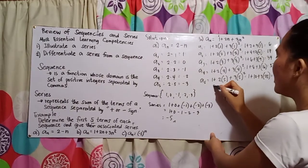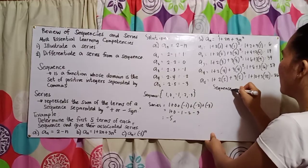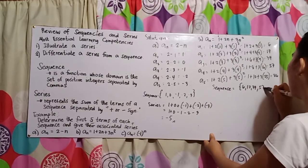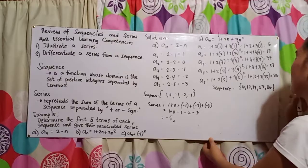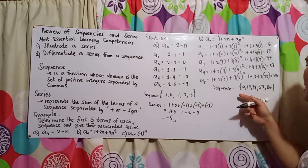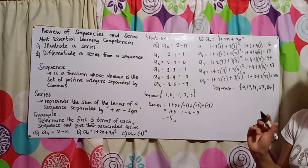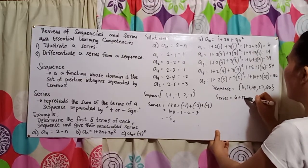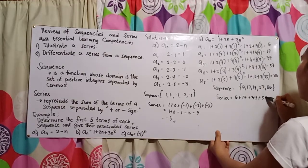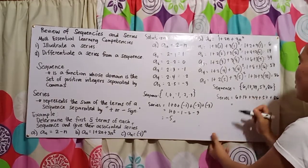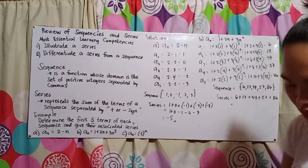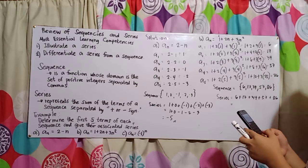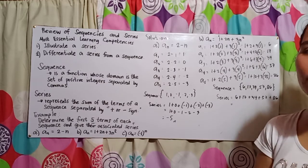So our sequence for letter B is {6, 17, 34, 57, 86}. The associated series is 6 plus 17 plus 34 plus 57 plus 86. We just add them all together, and the result is 200.